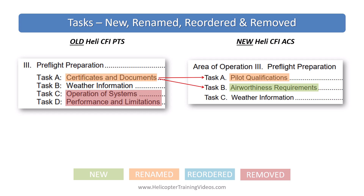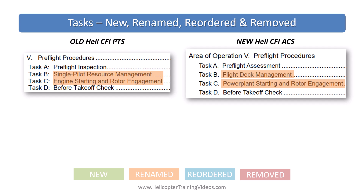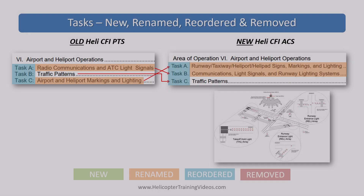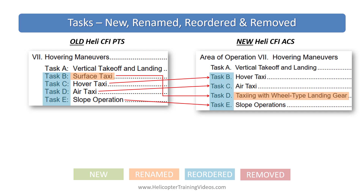Operational systems and performance limitations got moved into the technical subjects area of operation. Pre-flight lesson on a maneuver to be performed in flight — no changes there. In area of operation five, pre-flight procedures: single pilot resource management became flight deck management, which we already covered. Engine starting and rotor engagement became power plant starting and rotor engagement. Under airport and heliport operations, some changes to order were made. They added runway lighting systems — that's your runway entrance lights or RELs, and your takeoff hold lights or THLs — so make sure you read up on those and understand how they would be taught.